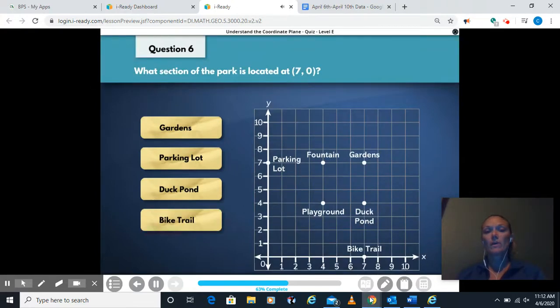What section of the park is located at 7, 0? So I'm going to go over 7 on my x, and I'm going to stay at 0. I'm not going up on my y, I'm staying right at my 0 on the y as well. So that would be the bike trail.